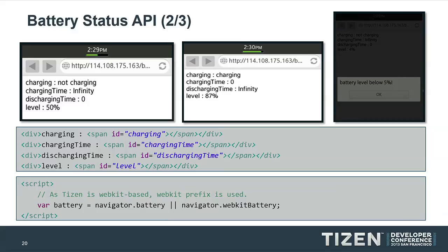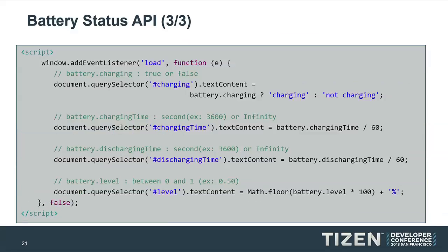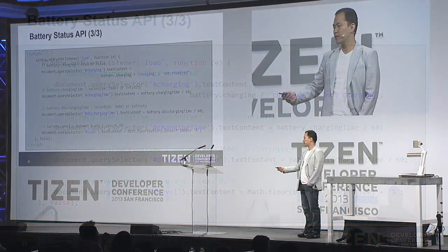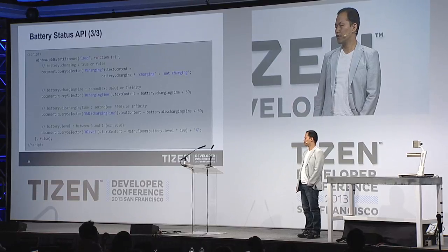Here's how to use the Battery API: you use the navigator.battery object. There are properties like battery.charging, which tells you whether the device is charging. There's battery.chargingTime, which gives the time required to reach a full charge. There's also a property for how much time remains until the battery is empty, and battery.level to get the current charge level.